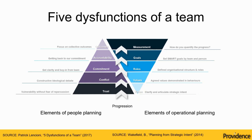Lencioni built the first pyramid on the left-hand side, and I'm going to walk you through the five layers of that. It's a very logical, rational, reasonable model. It is non-sequential, though — we're going to start at the bottom and progress to the top, but realize that these layers all relate to each other simultaneously in any team.